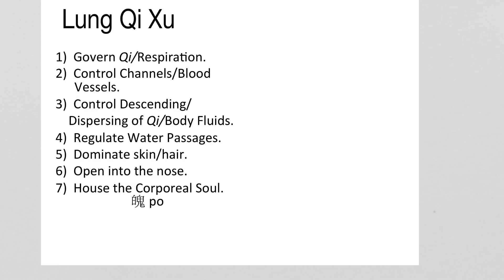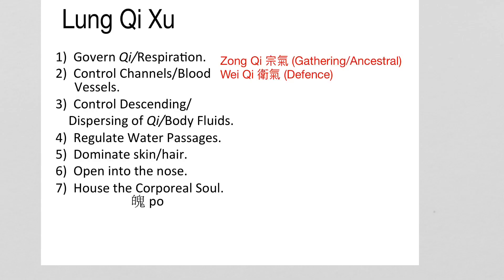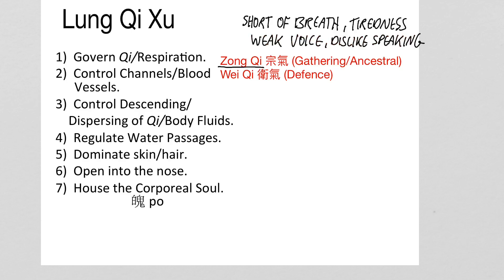If the lung qi is weak, this is going to affect the Zhong qi (the gathering or ancestral qi) and the Wei qi. If the Zhong qi is weak, the chest is weak, so there'll be shortness of breath, tiredness, weak voice, dislike of speaking, and there may be a stooped posture.